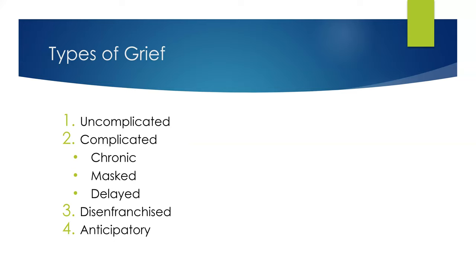There are three types of complicated grief. Chronic complicated grief begins as normal grief but continues long-term with little resolution of feelings and an inability to rejoin normal life. Masked grief occurs when a person expresses their grief through other types of behavior, such as drinking heavily or a couple arguing a lot after the loss of a child — they are doing everything to cover or mask their grief. Delayed grief is grief that is put off to a later time — for example, 'I'll think about it later; right now I'm busy keeping a roof over our heads.'